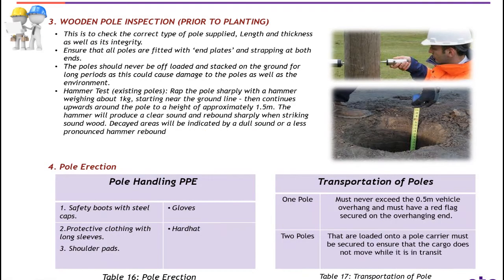Wooden pole inspection before planting. This is to check the correct types of poles, plied length and thickness as well as its integrity. Ensure that all poles are fitted with end plates and strapping at both ends. The poles should never be offloaded and stacked on the ground for a long period as this could cause damage to the poles as well as the environment.